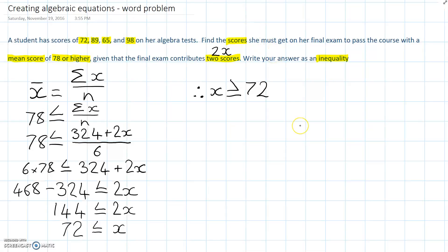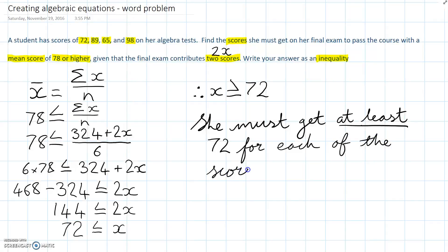Now, a word problem gets a word answer. So, now we would say she must get at least 72 for each of the scores on her final. And that's it. I hope you found that helpful.